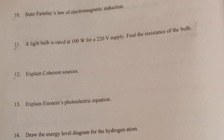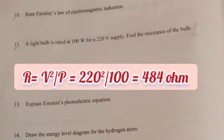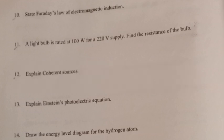Question 11: A light bulb is rated at 100 watt for a 220 volt supply. Find the resistance of the bulb. Answer: R equals V squared by P equals 220 squared by 100 equals 484 ohm.